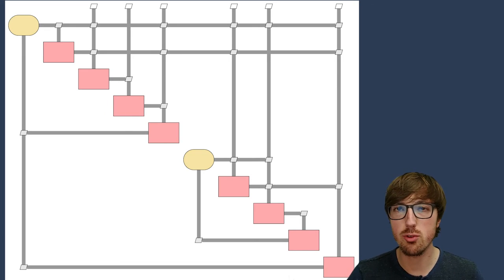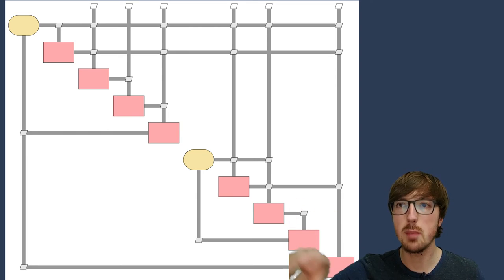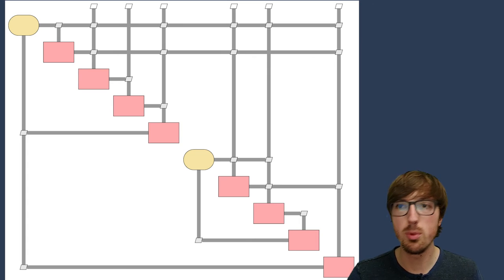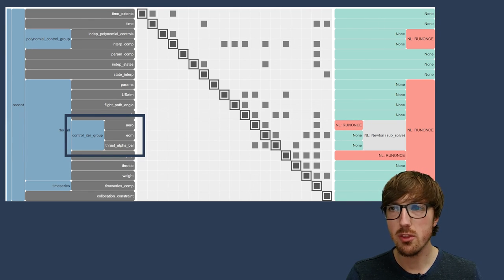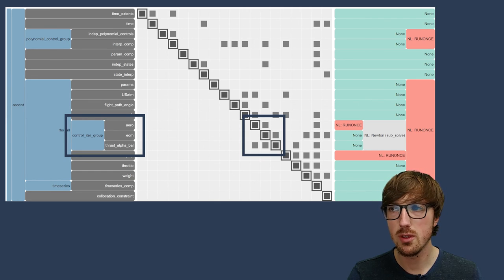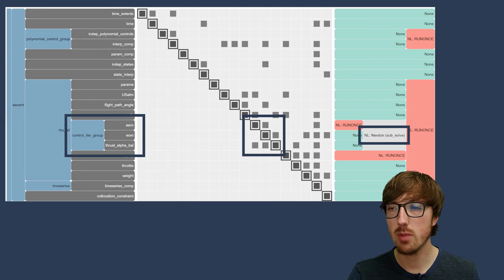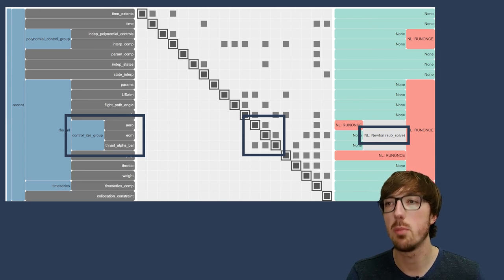Here's an XDSM of an actual aircraft design problem that we're working on here. And as you can see, there's some information on the lower triangular side of things that is being passed back to solvers. This implicit relationship needs to be resolved using solvers. Here is an N-squared diagram that shows, okay, if we have this control iter group here, and it's got this backwards coupling on the lower triangular part of the matrix, we need to have a solver. And so I'm highlighting that here, that if there's this coupling, then we need to have this Newton solver over here or some type of solver.